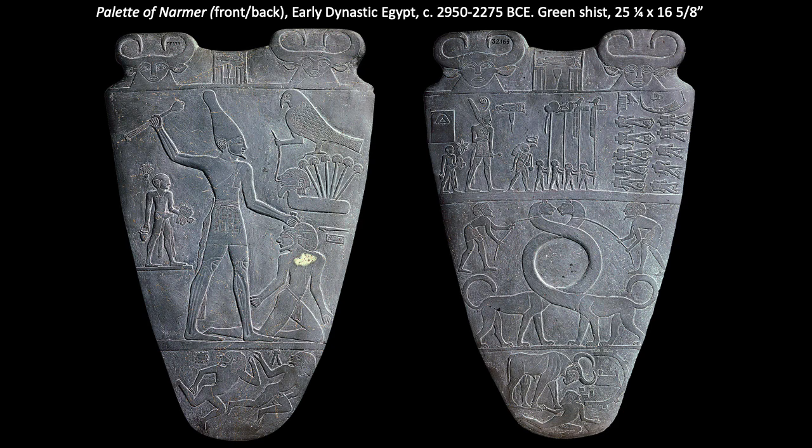Before the reign of Narmer, Egypt was divided into Upper Egypt to the south and Lower Egypt, named so because of the flow of the Nile towards the more fertile north. Palettes such as this one were used to grind pigment that both men and women painted around their eyes to protect them from the sun. The round area on the front of the Palette of Narmer, in which the necks of two creatures intertwine, would have been the area used for mixing that paint.